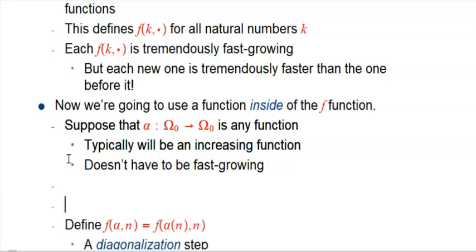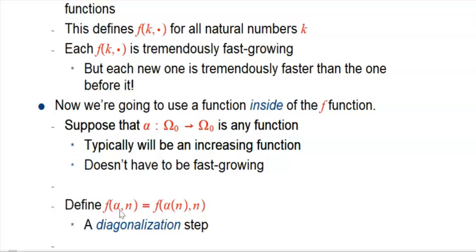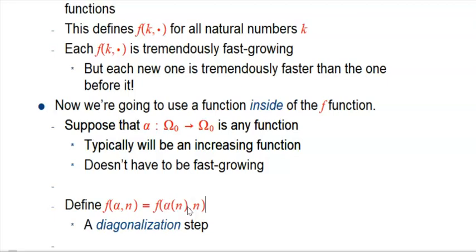What we're going to do is define f of alpha — using alpha as a control argument. So far we've only used non-negative integers as control arguments. But now we say it's the alpha-th f function applied to input n. What you do is take n and put it into alpha. Alpha takes a number and spits out a number, so this becomes one of those f of k of n's, because alpha of n is some integer k. This is what we call a diagonalization step.